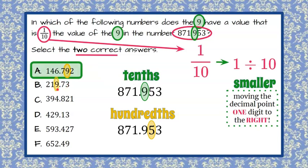Looking at B, the 9 is in the ones digit. It's to the left of the decimal point. That is not correct.